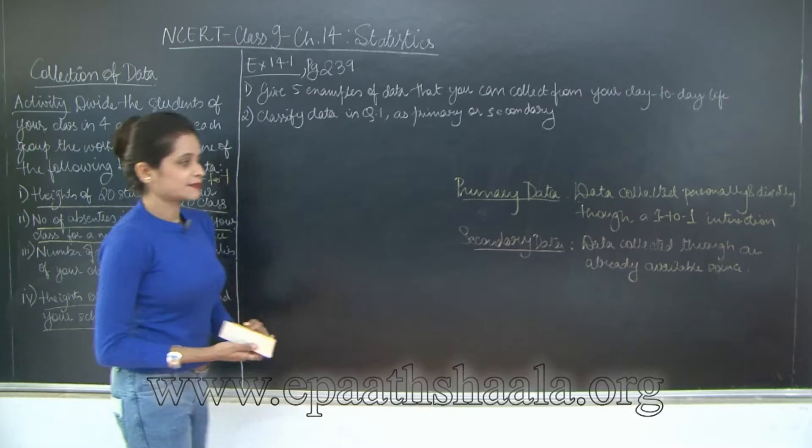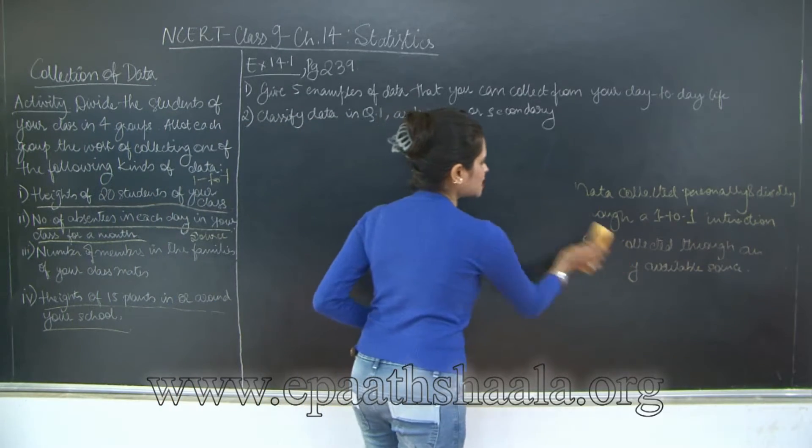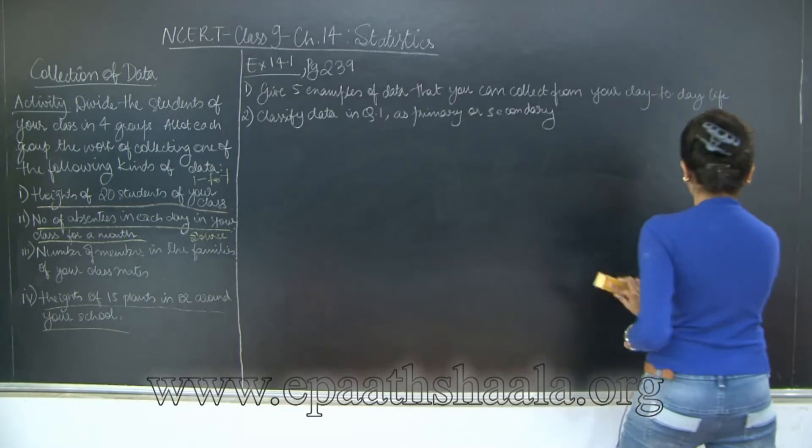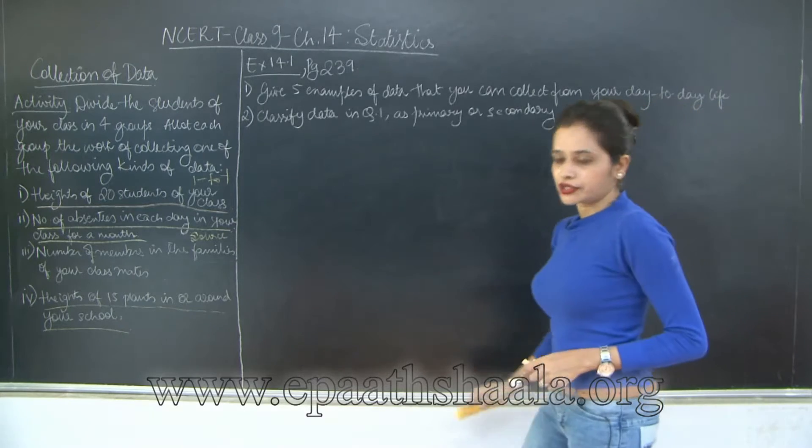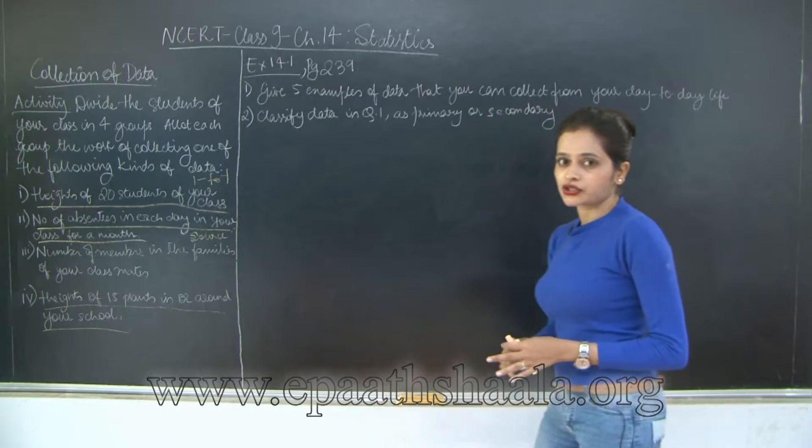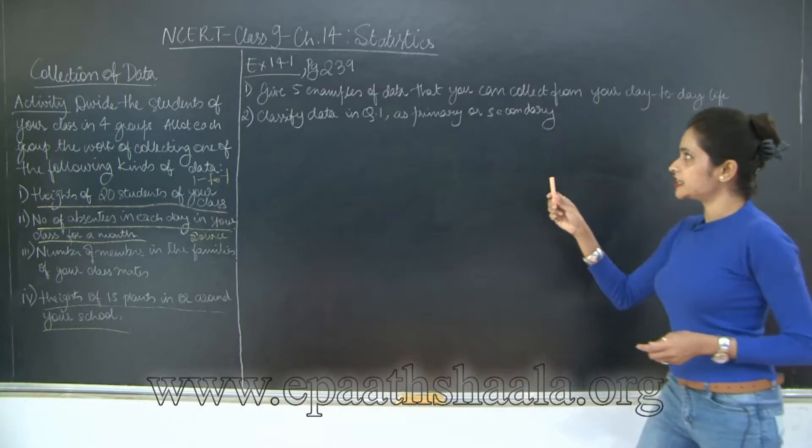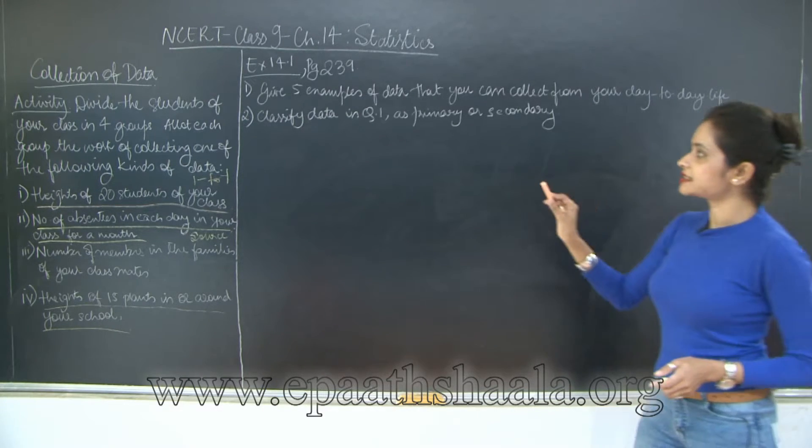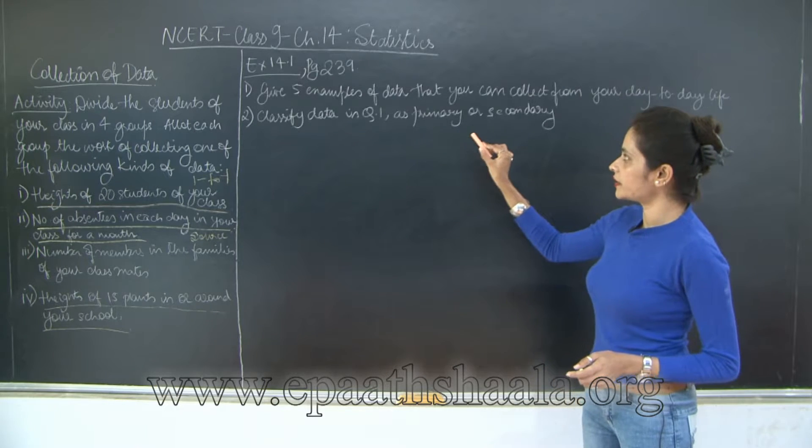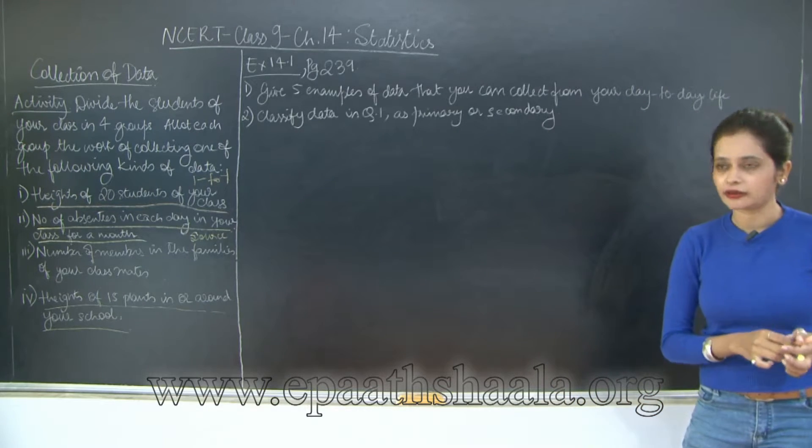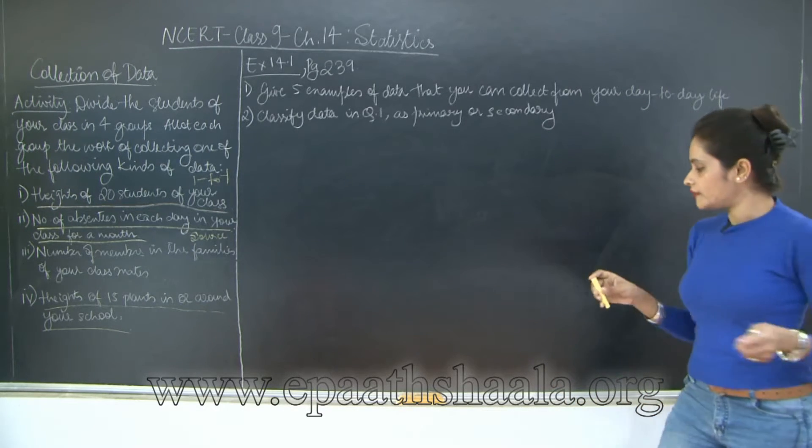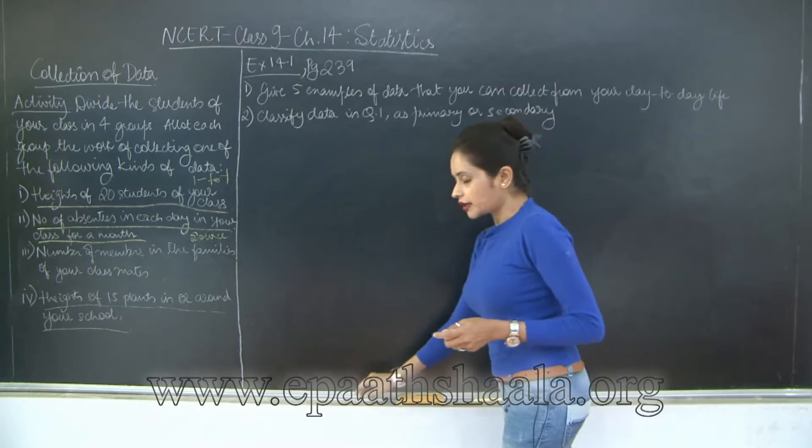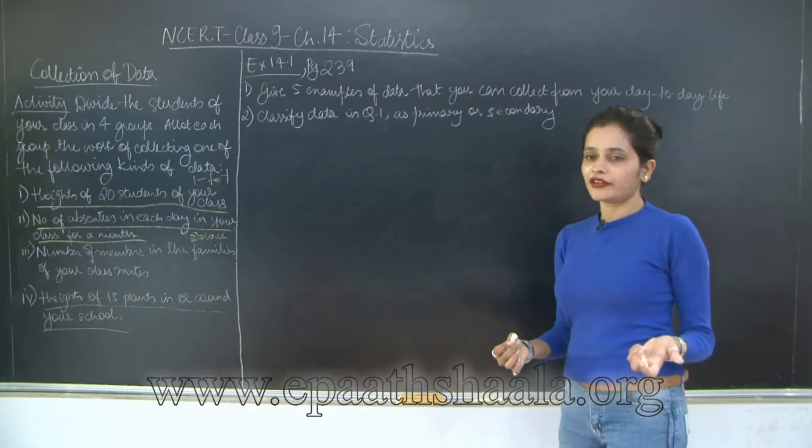So to explain this further, we have Exercise 14.1 of your textbooks. This is on page 239. Let's read out the first question: Give five examples of data that you can collect from your day-to-day life. And the second one is classify data in question 1 as primary or secondary data. So let us just write five simple examples that we come across in our day-to-day life where we are collecting data.